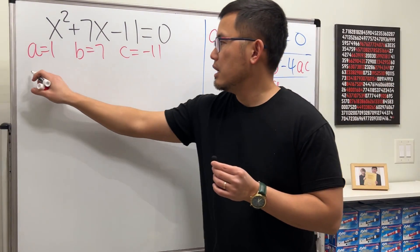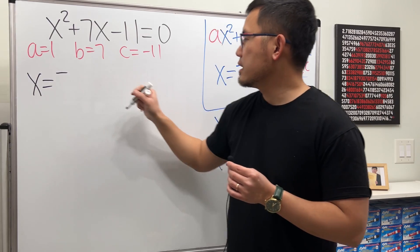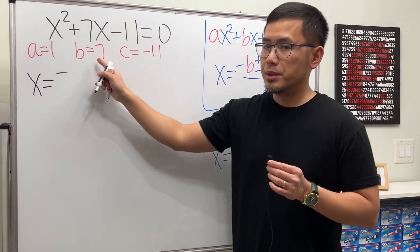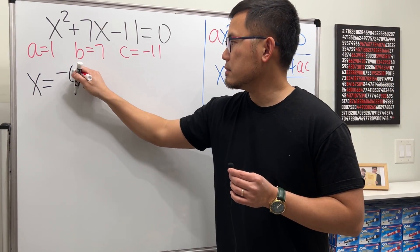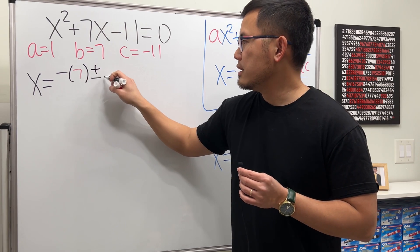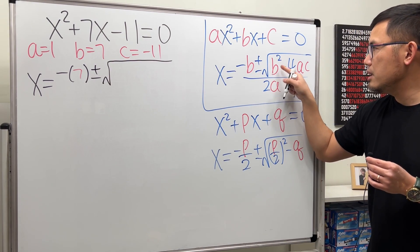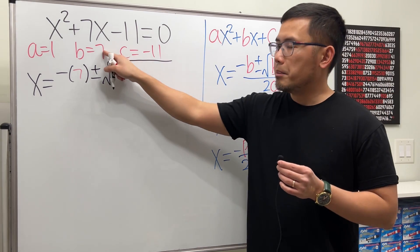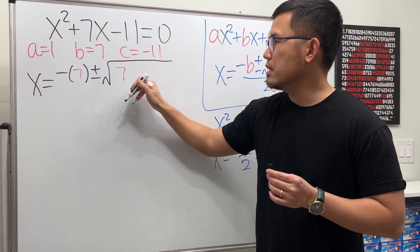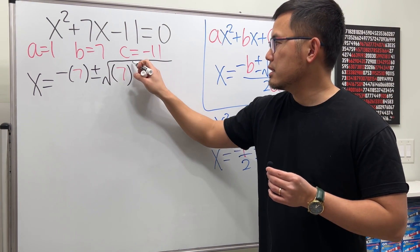Have a look. x = -b, which is going to be -7, and then plus or minus, open the square root, and then we have b². b is 7, so we have 7, put parentheses around it, and then square that.